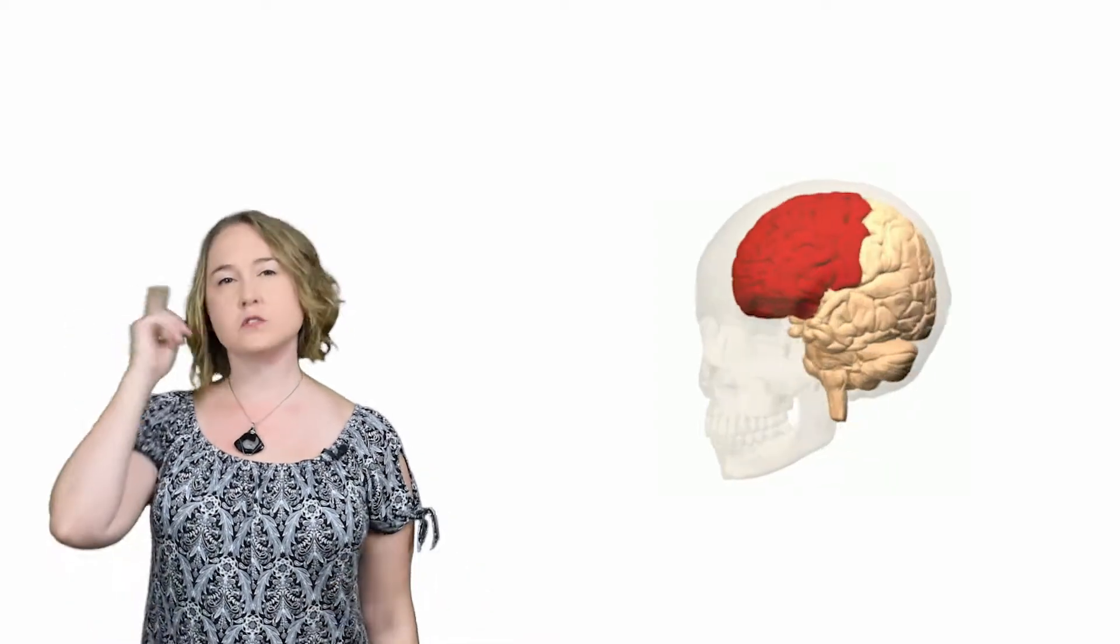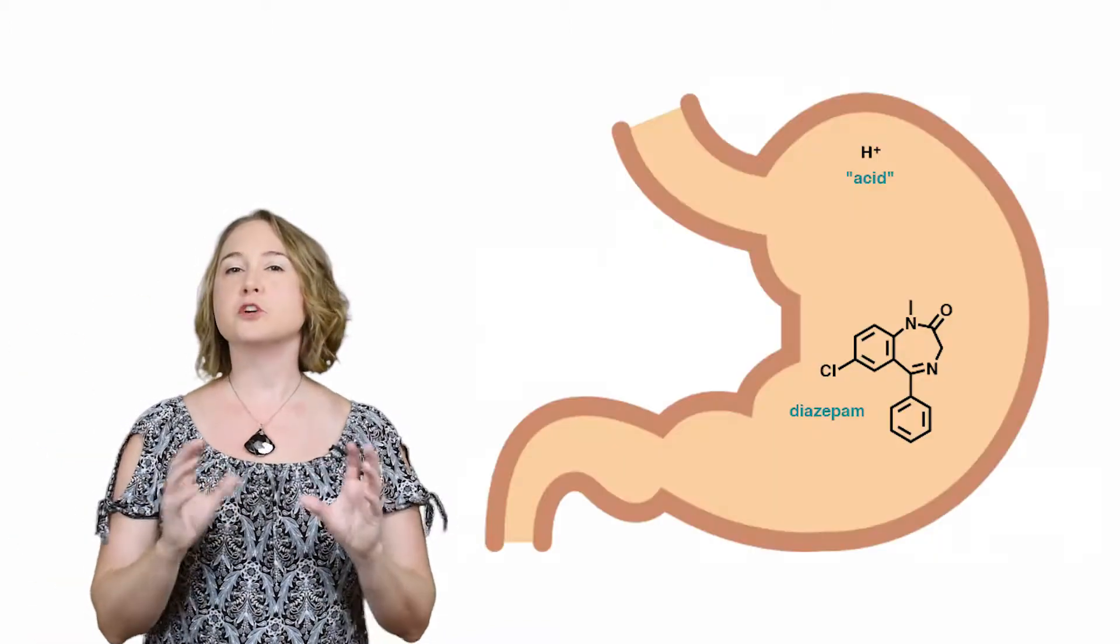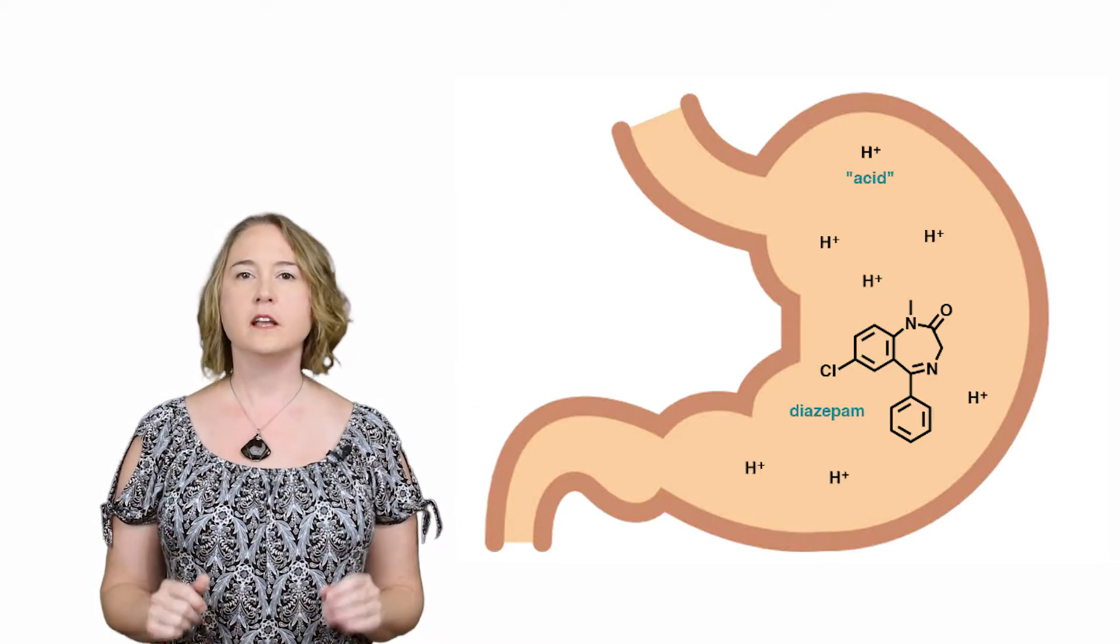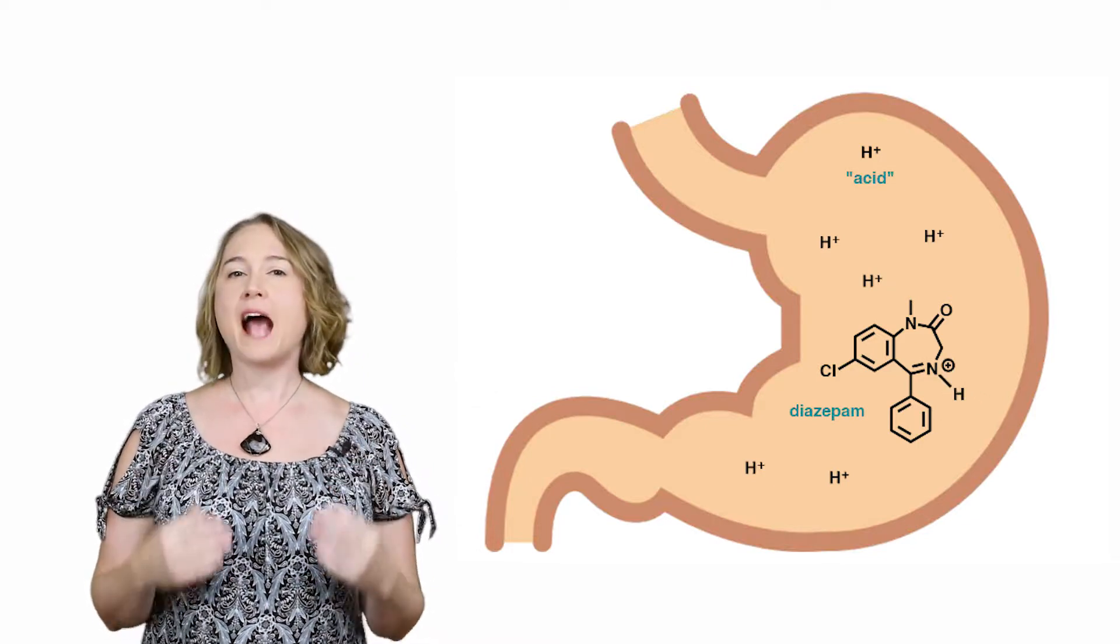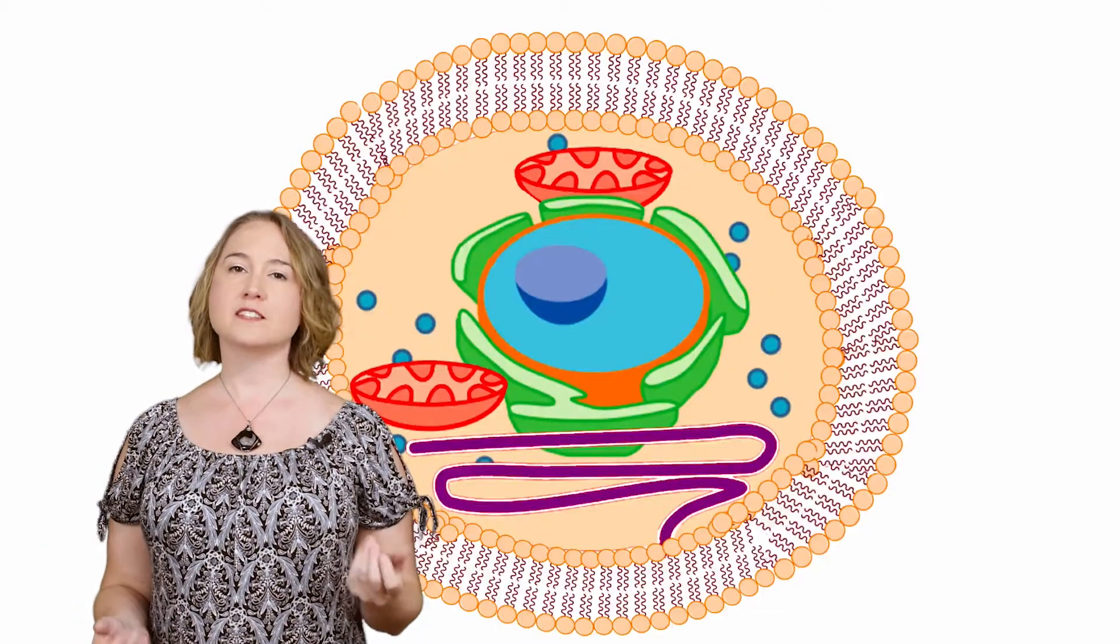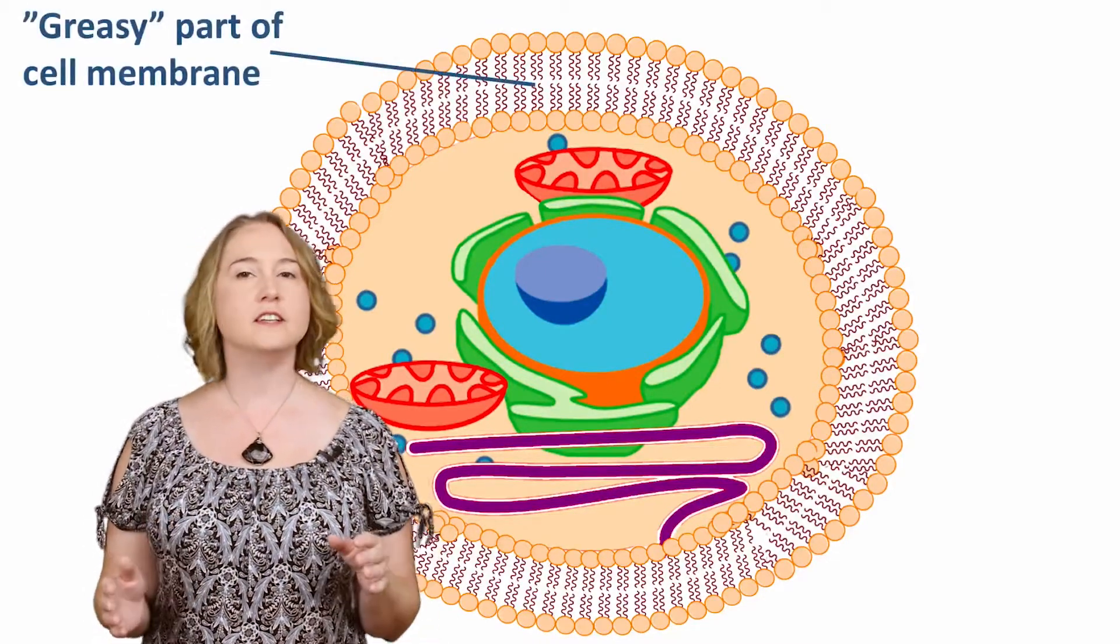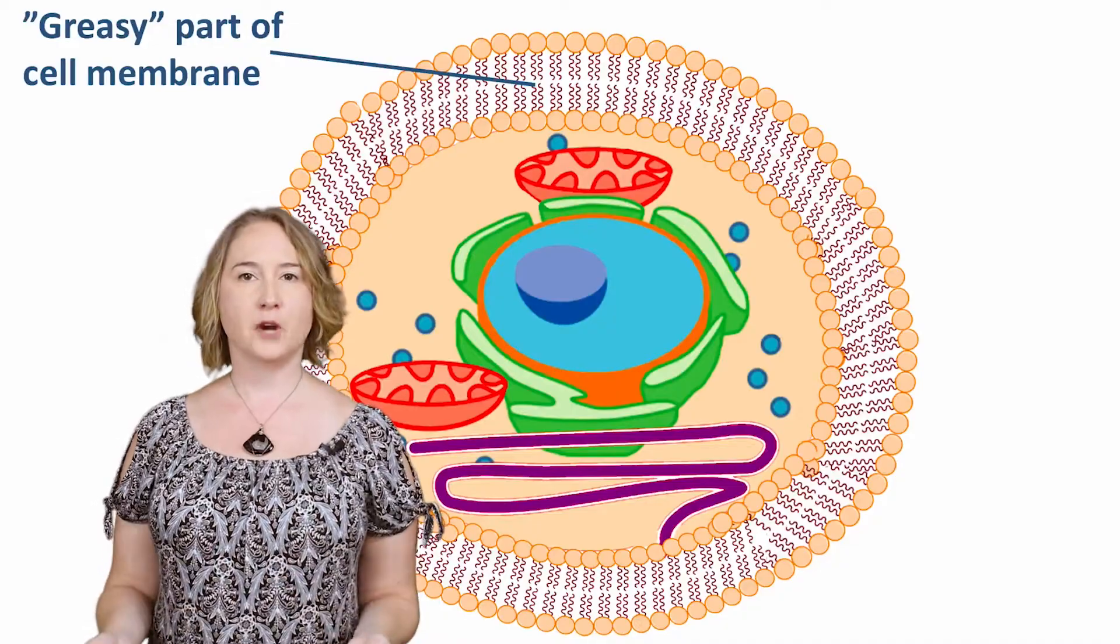A lot of drugs, especially those affecting the brain, can react reversibly with the acid in the stomach and become charged in that low pH environment. If the drug is going to pass through the lining of the digestive system, it is best if it is not charged. This is because the lining of the digestive tract is made up of a cell type called epithelial cells, which are surrounded by a greasy membrane.